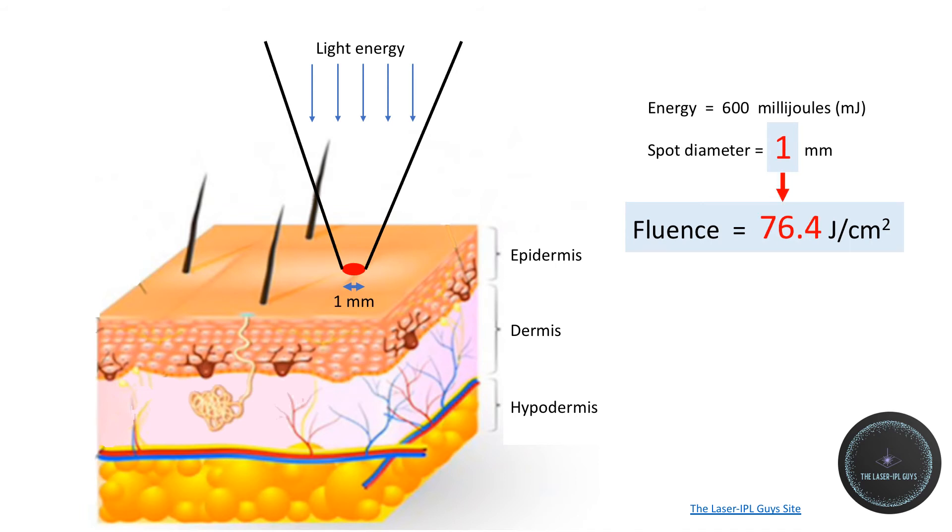Finally, if you take it down to a 1 millimeter spot diameter with the same energy as previously, then the fluence now jumps up to 76.4 joules per square centimeter. A massive increase.